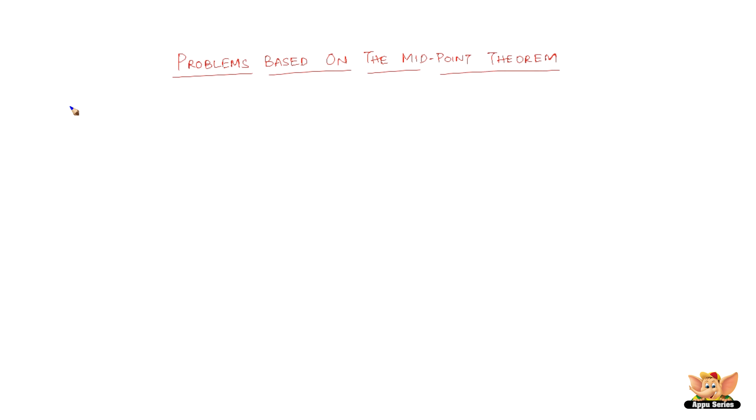Now in this video let us solve some problems based on the midpoint theorem. In the figure shown, AD and BE are the medians of triangle ABC, and BE is parallel to DF. Prove that CF is equal to 1/4 AC.